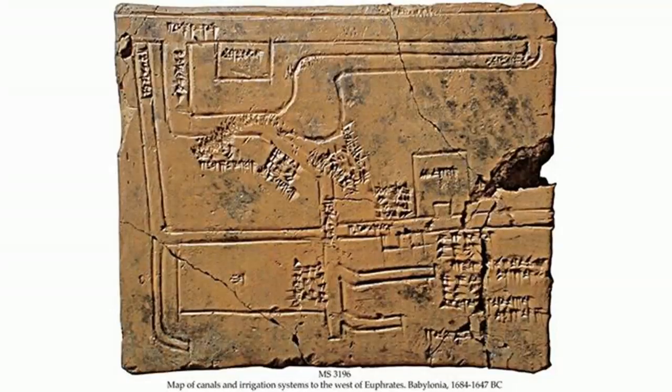If you lived in ancient Mesopotamia, canals were something of a fact of life. This clay tablet shows a map of part of the irrigation system near the Euphrates River, and it dates back to around 1700 BC. Not surprisingly, when Mesopotamian mathematicians came up with practical problems for their students, a lot of the problems involved canals.